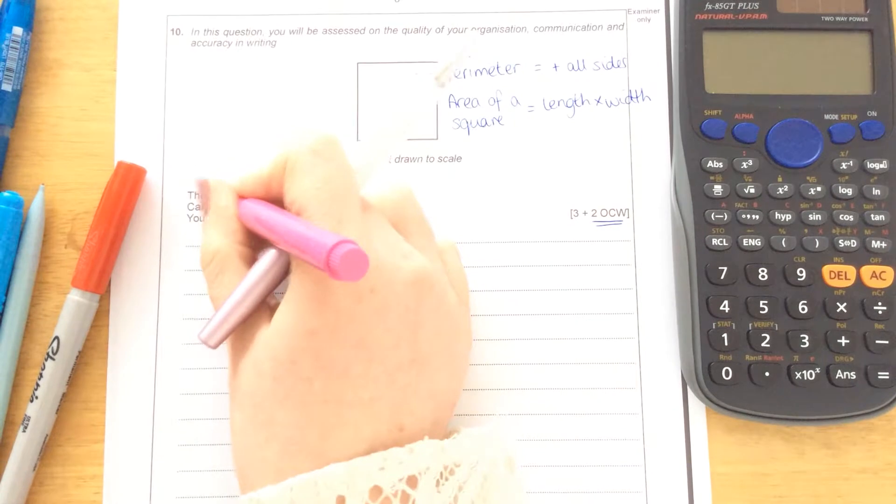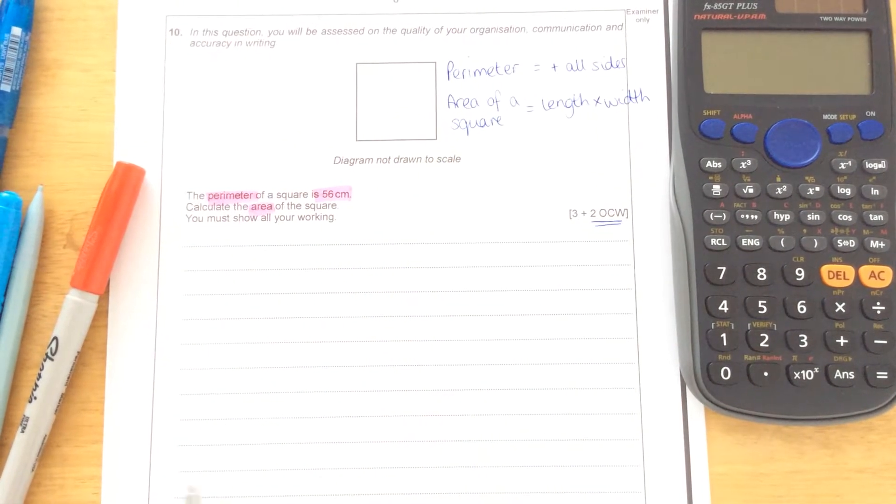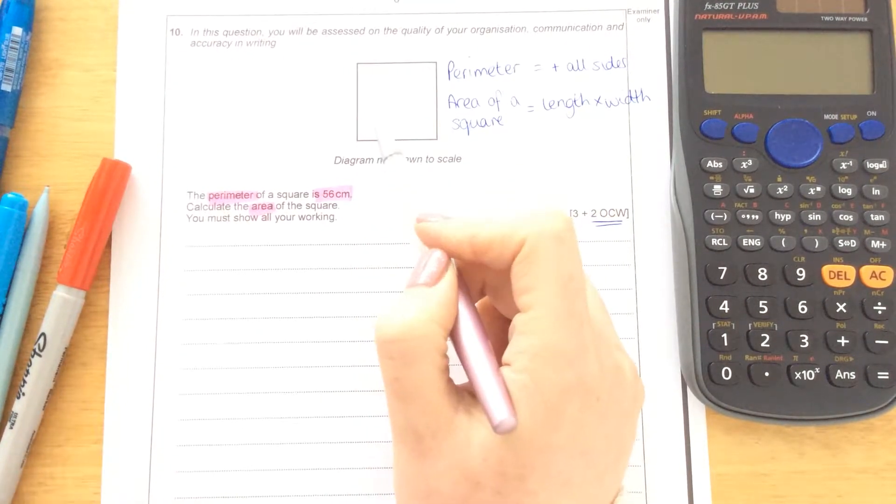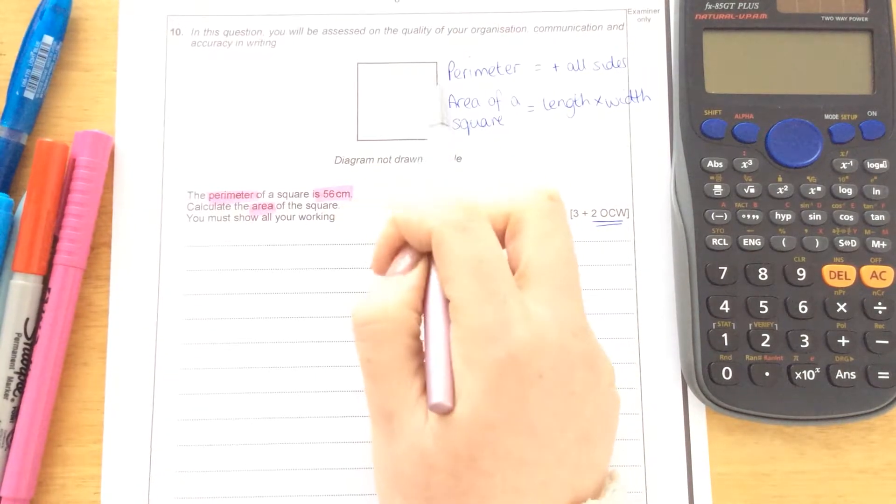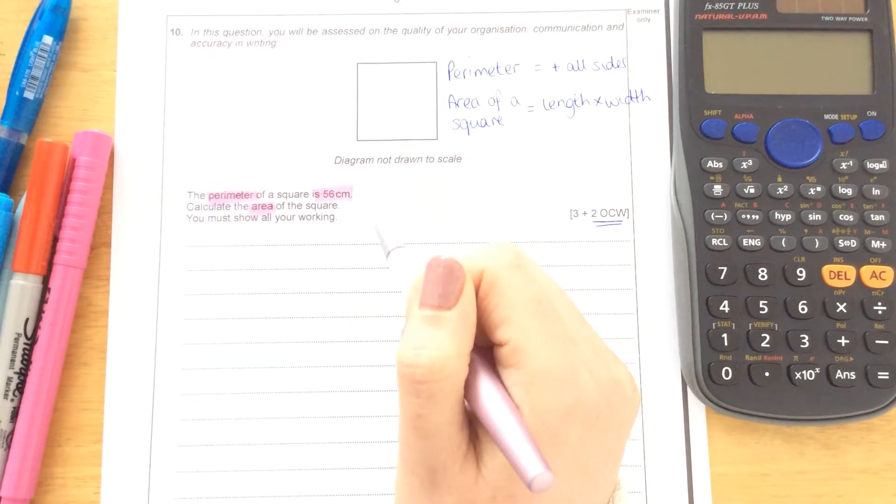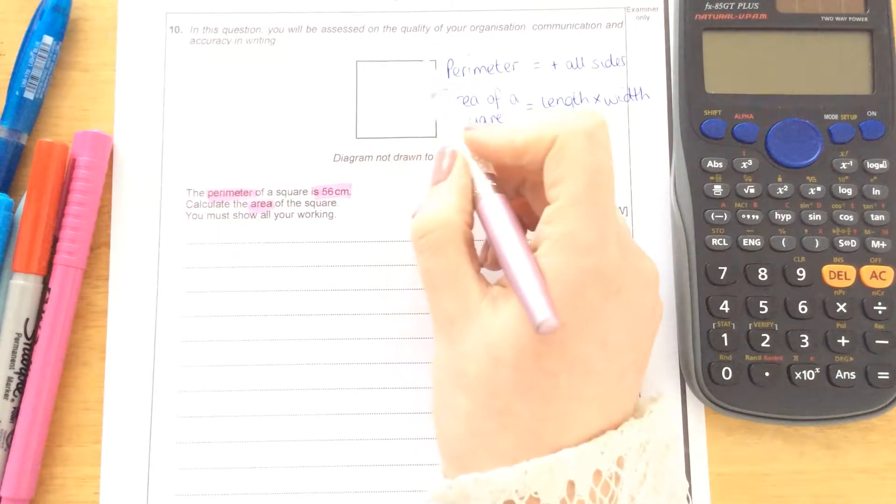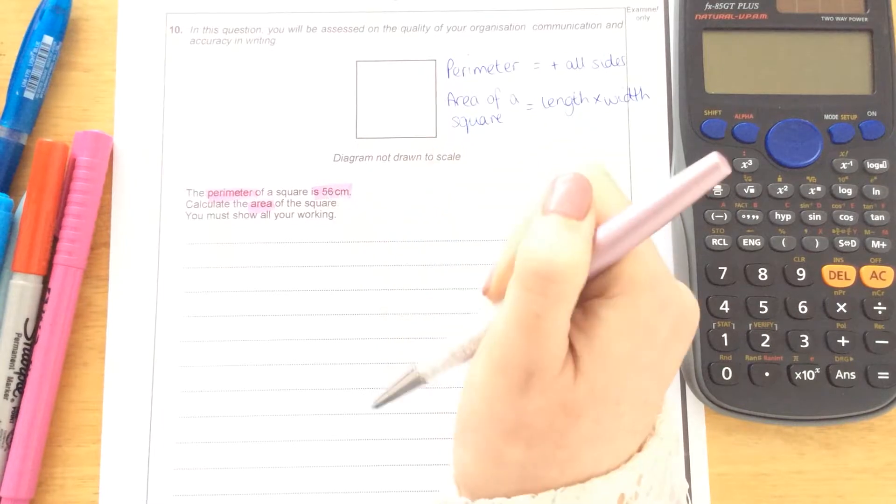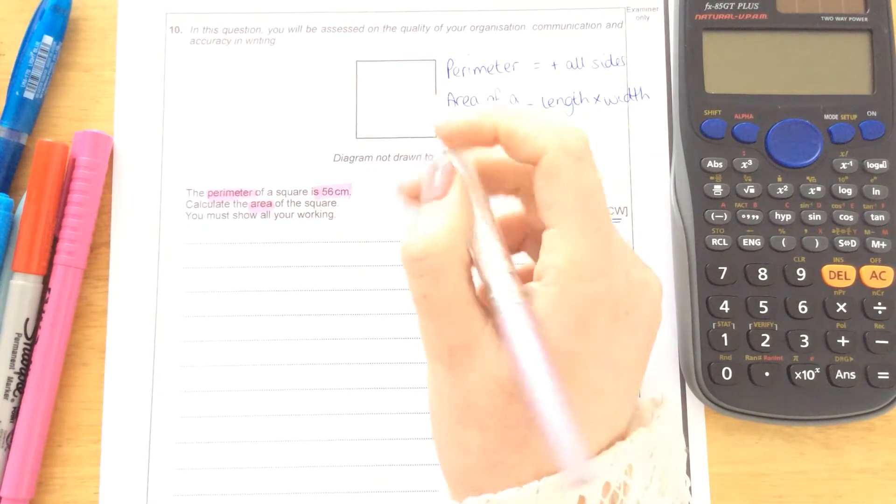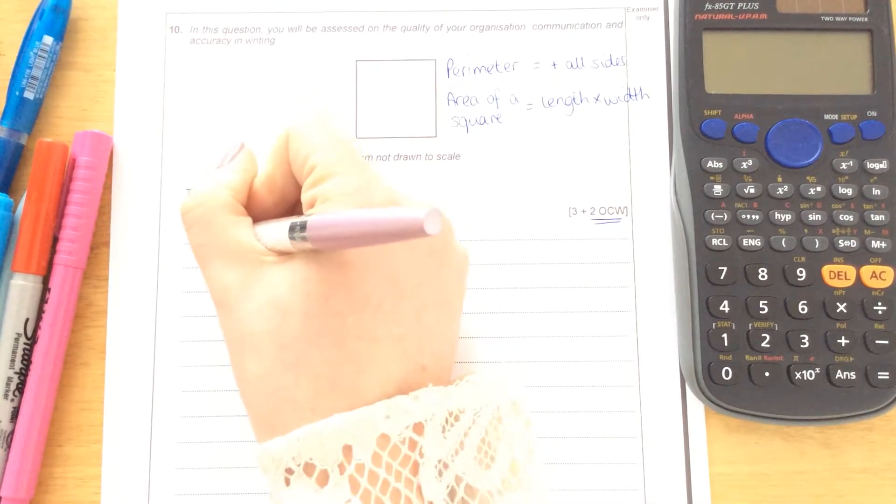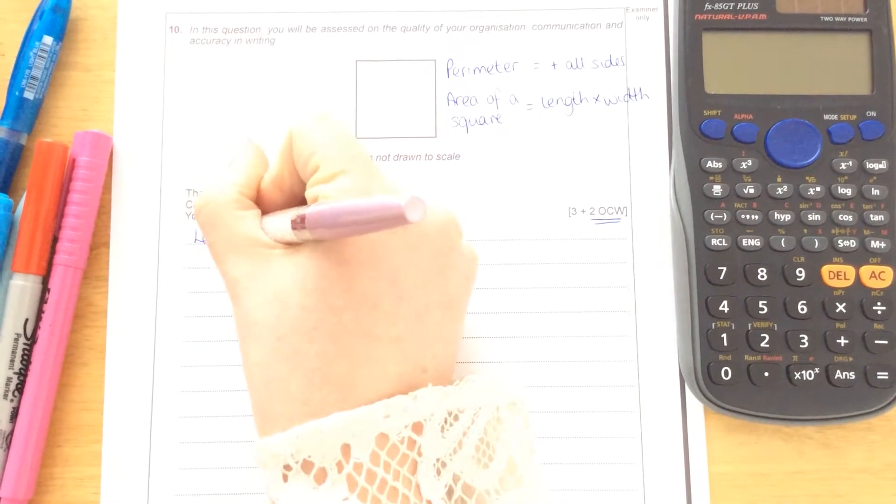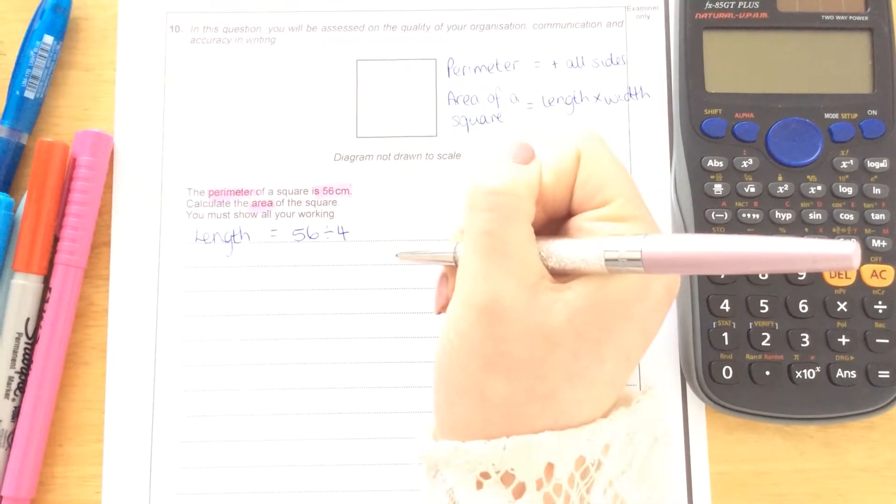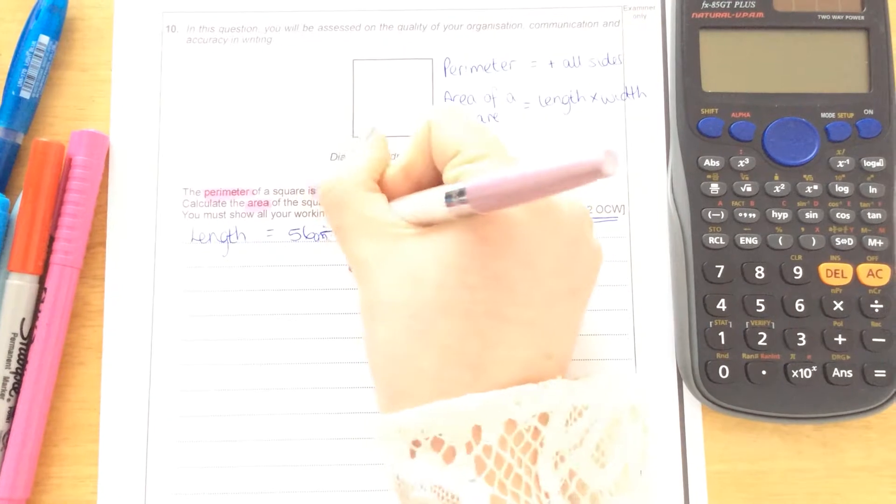The area is length times width. What we know about squares is that all of these sides must be exactly the same. So we could say that the area of a square would be the length squared. If we need to find out what one of these sides is, if all four of them add up to 56, then we're basically sharing this 56 by 4. So we can work out 56 centimetres divided by 4.